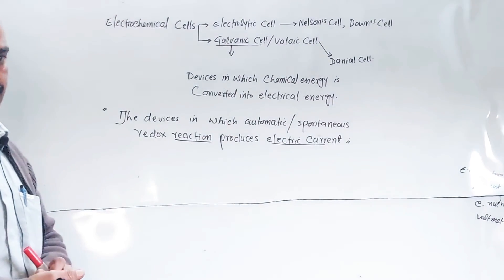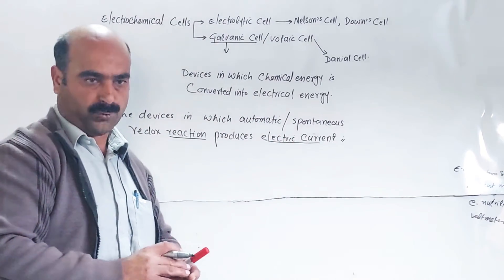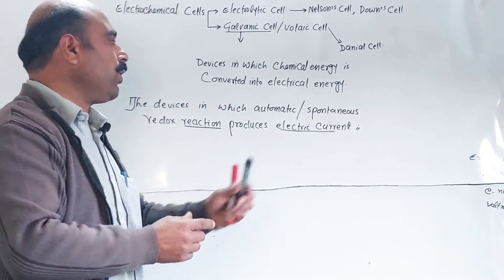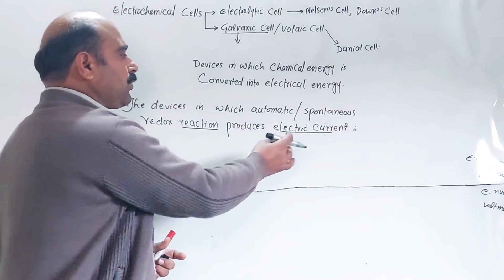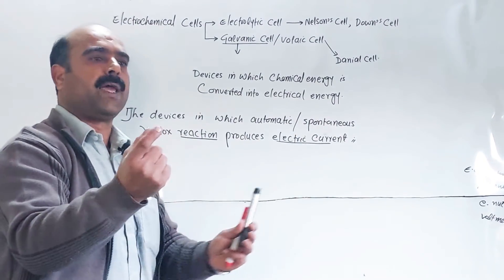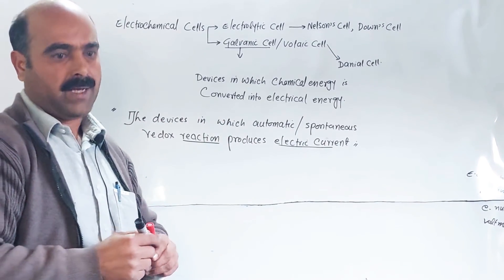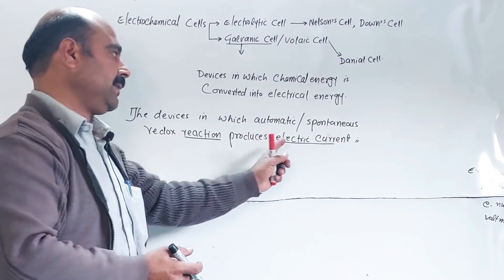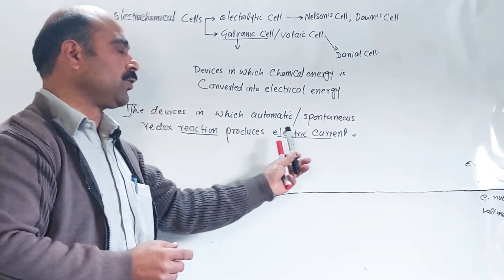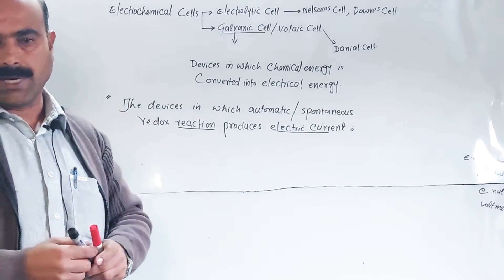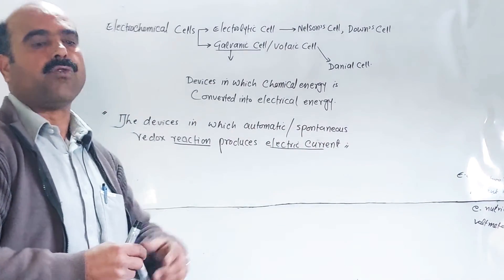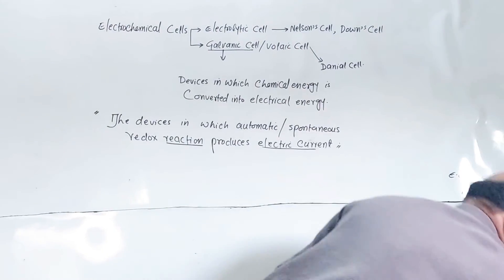The electric current produced can be used — for example, if we connect a voltmeter, we can measure the voltage produced by the galvanic or Daniel cell. According to that voltage, we can attach a bulb of matching voltage rating to light it, or attach a device for vibration or sound, or attach a heater for heating. So the chemical reaction produces electric current which can do light, sound, or heat.